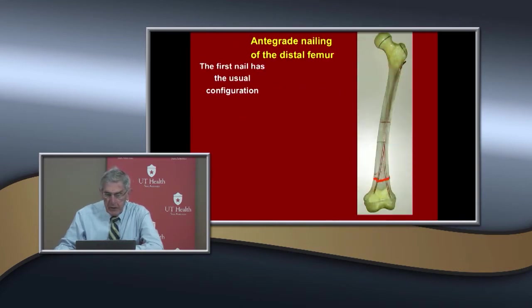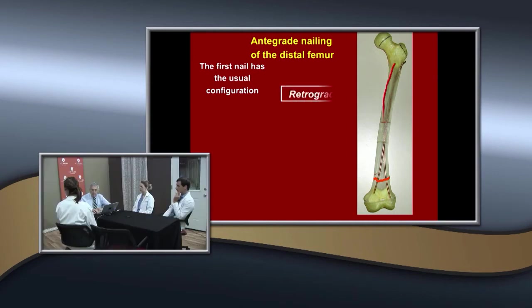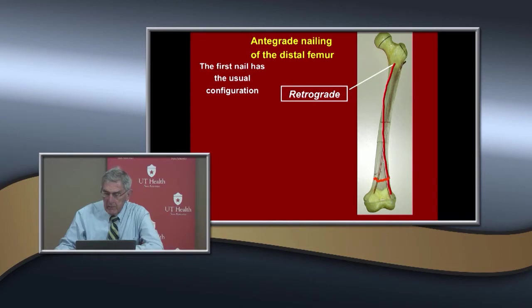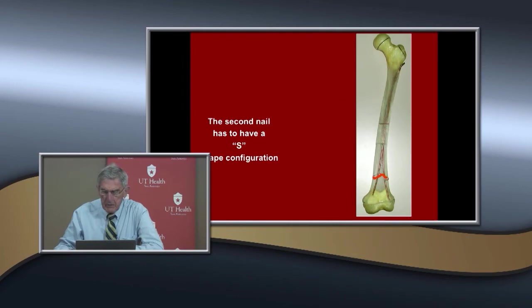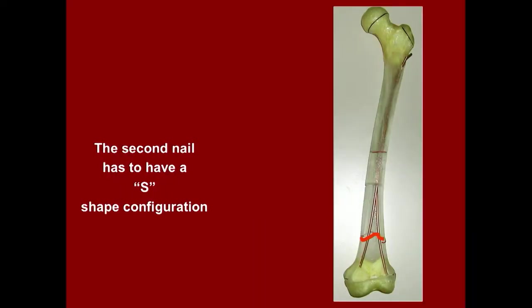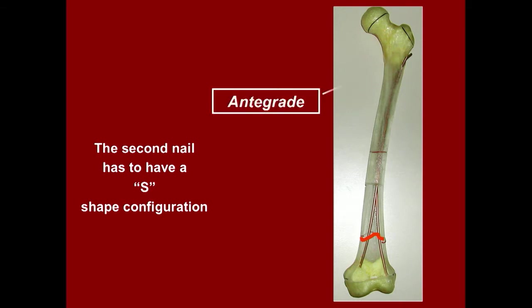The first nail is put in just like a retrograde nail with a single curve. What about the second pin? You've got to have them separated in the distal fragment for stability. To get the pin on the other side, you have to bend it twice — two bends — which is a little difficult.